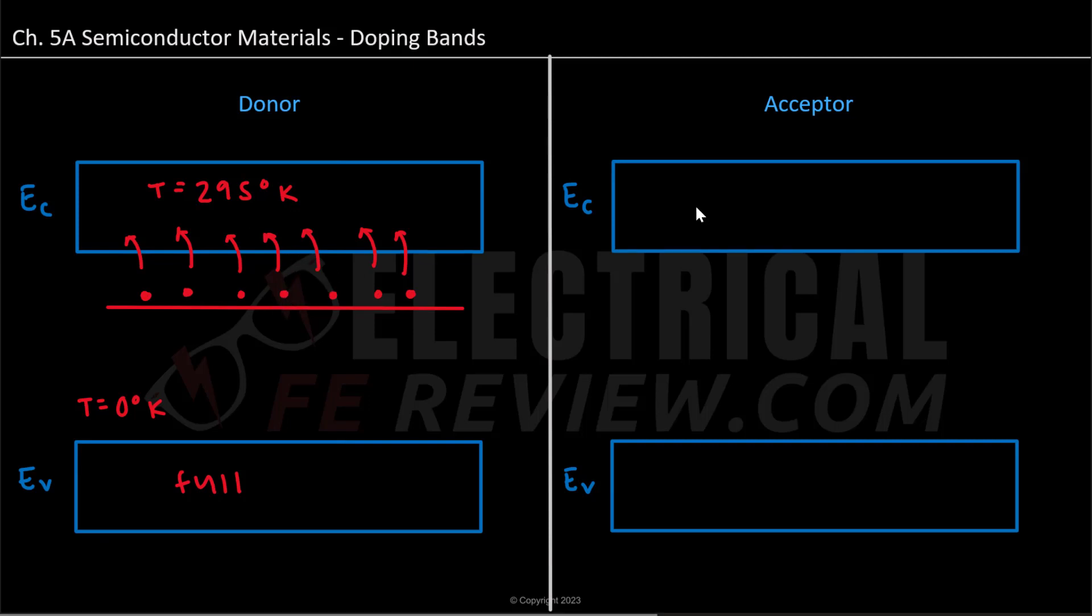This would then be considered as a donor band. And so now looking at the right hand side, again, at temperature is equal to zero degrees Kelvin, when our conduction band is empty and our valence band is full of electrons.